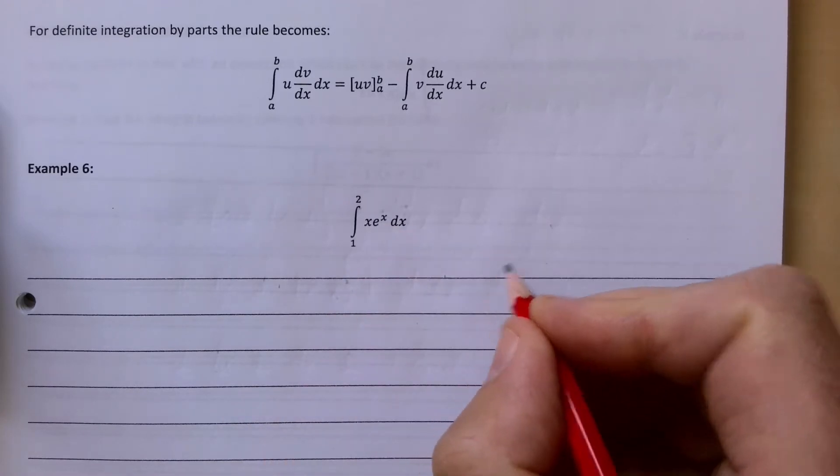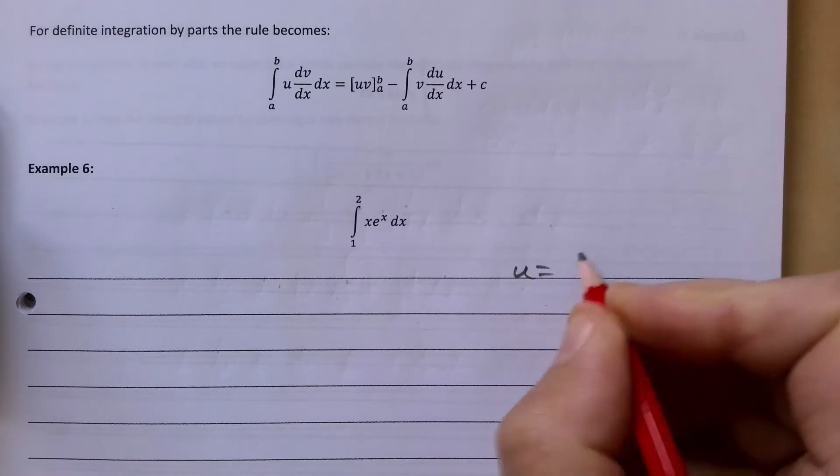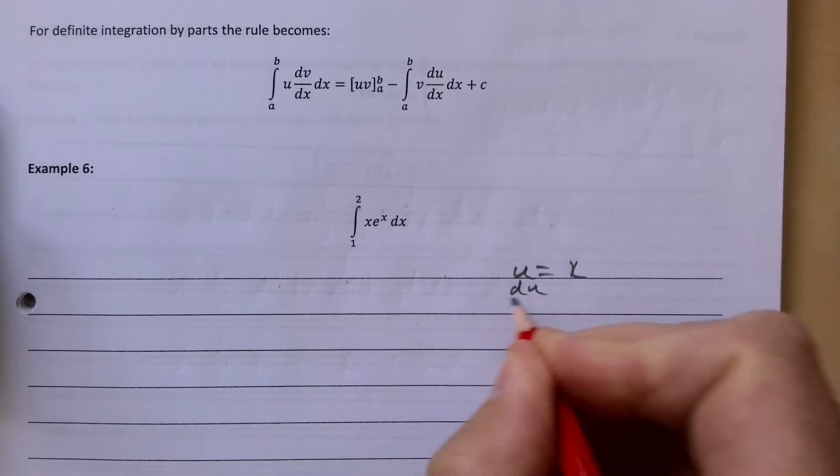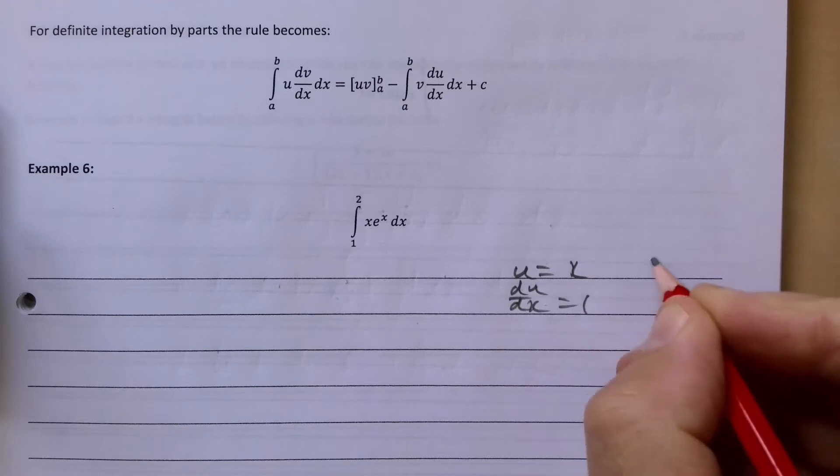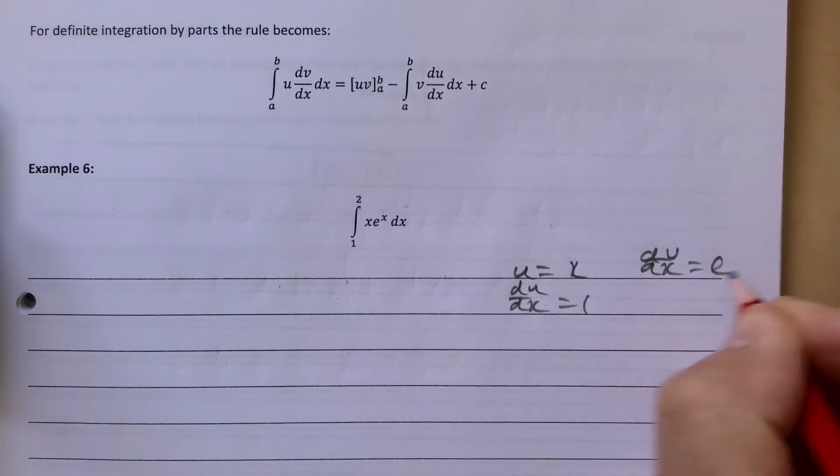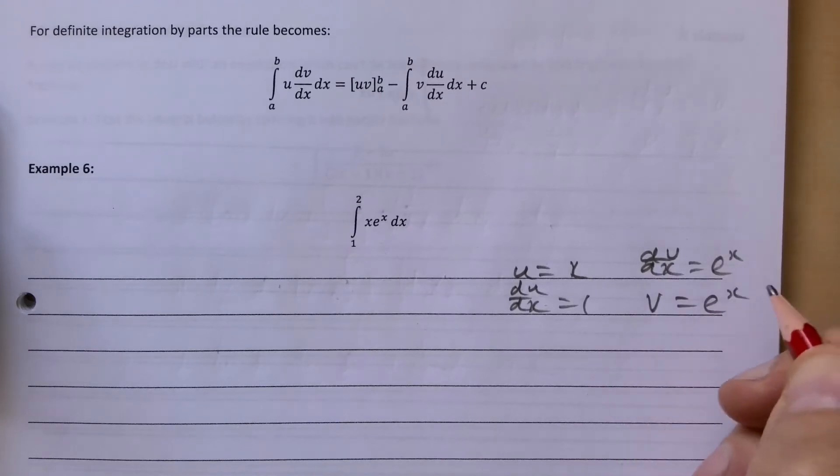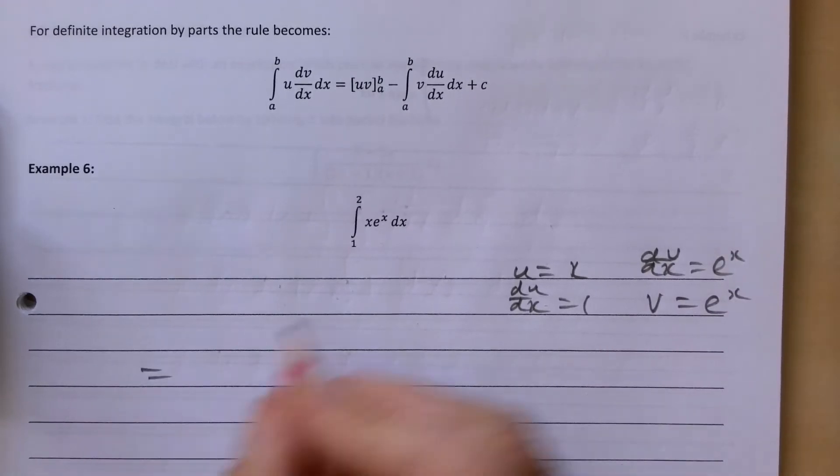x e to the x. I think we have a similar one like this in our notes, so u we're going to let equal to x, and obviously then du by dx is going to be 1. dv by dx is e to the x, and integrating that we get e to the x.